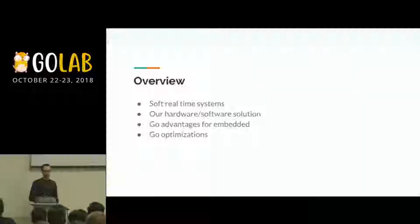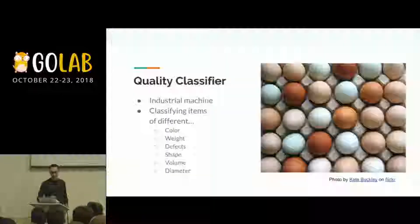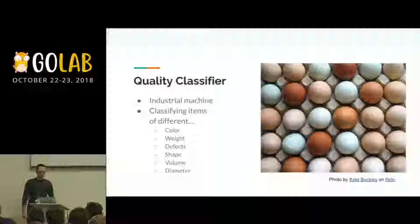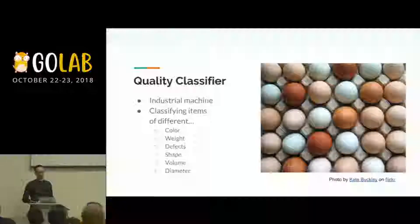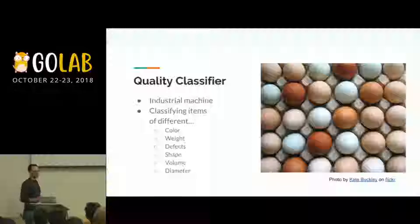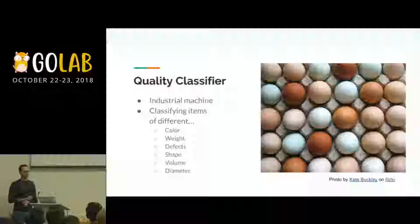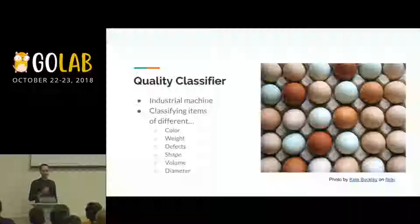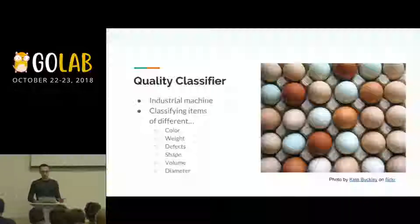Let's talk about a soft real-time system. The main goal of our system is to classify some items according to some quality features. These quality features depend on the items we are going to analyze. In the case of eggs, for example, we want to classify eggs according to their shape, size, volume, and color, in order to put together all the eggs that are similar and sell them in grocery stores.